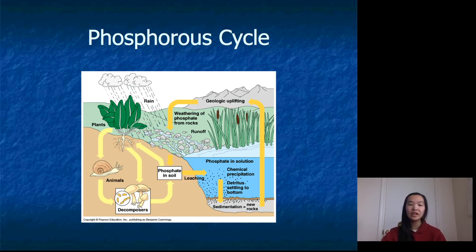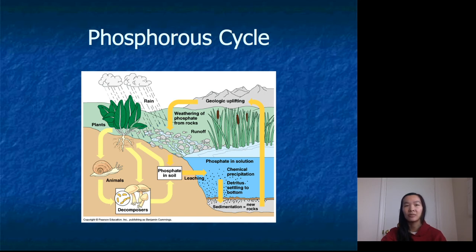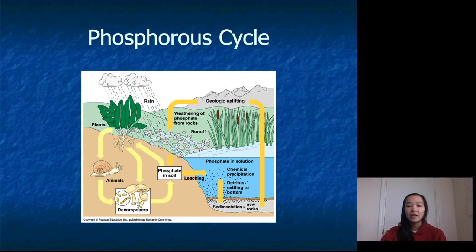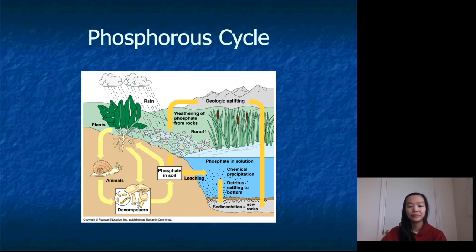Fertilizer tends to have some combination of nitrogen and phosphorus to feed plants because those are often the most limiting nutrients. It's important to understand how these cycles work so that researchers have an idea of how ecosystems function and how nutrients move from place to place inside an ecosystem.